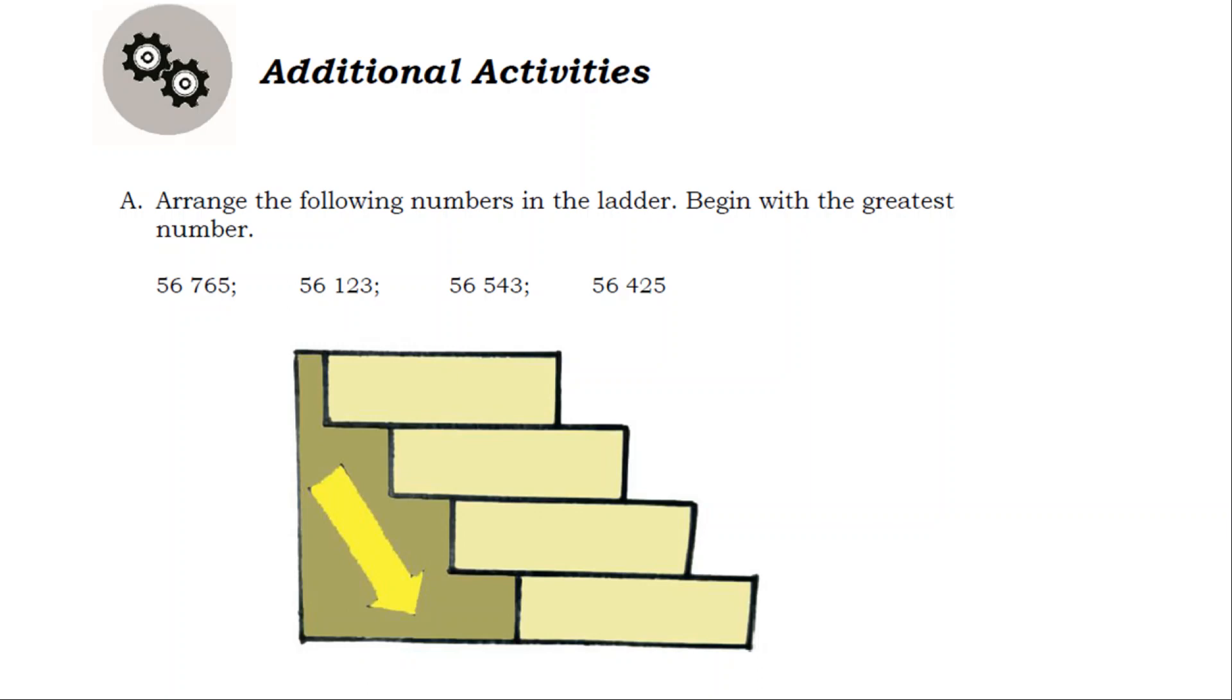Additional Activities. A. Arrange the following numbers in the ladder. Begin with the greatest number. Answer. 56,765, 56,543, 56,425, 56,123.